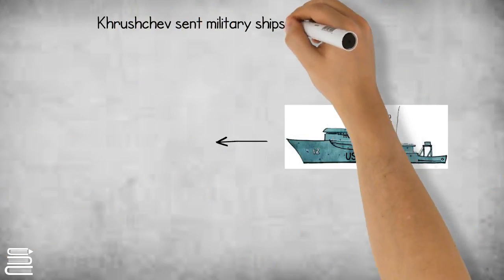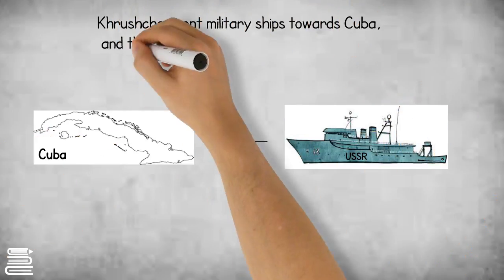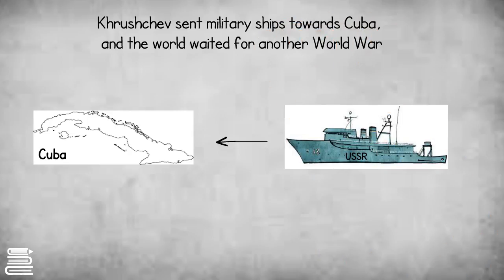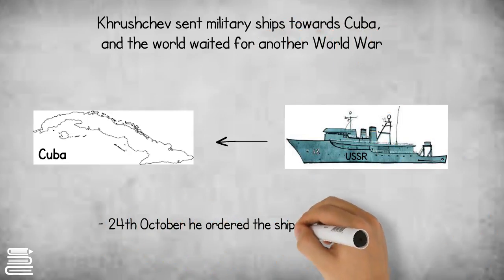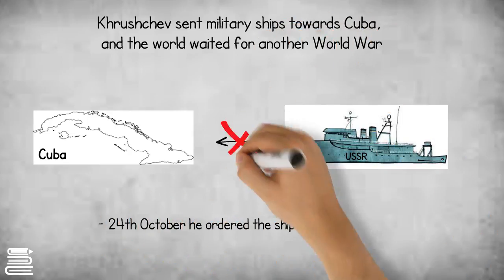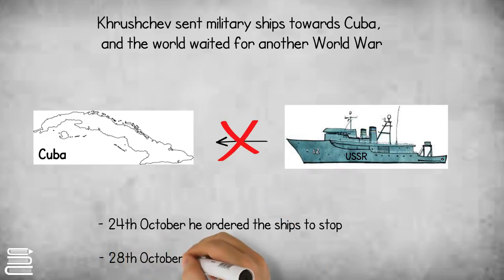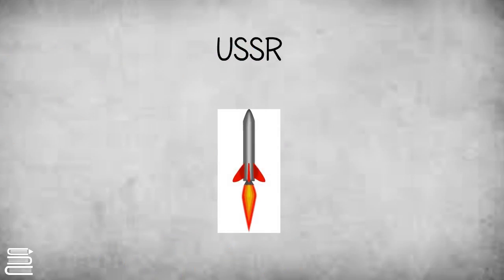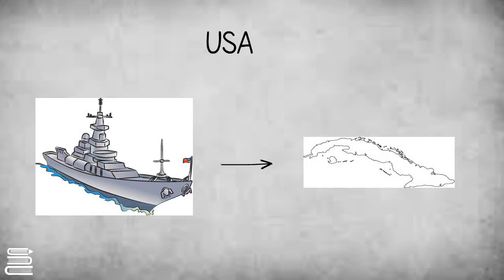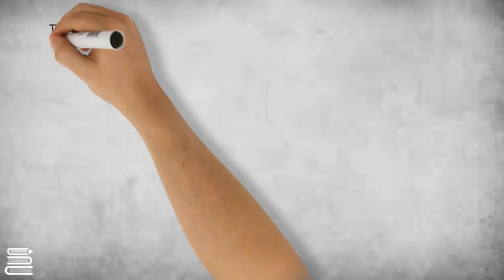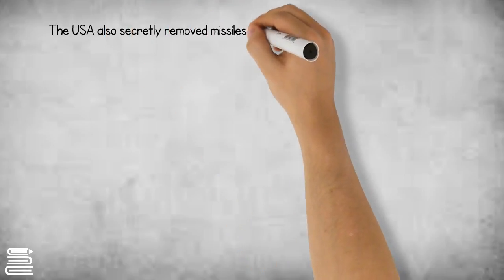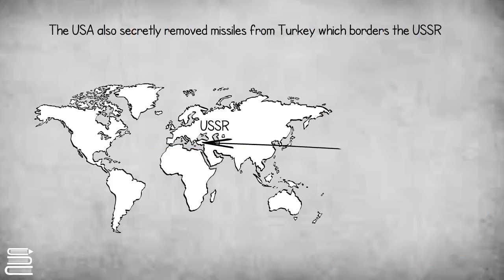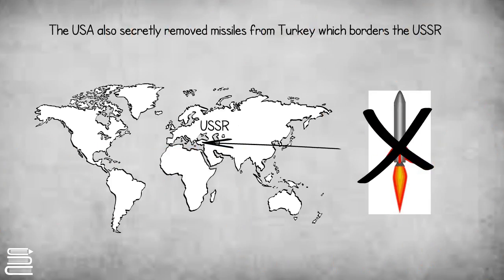Khrushchev sent military ships towards Cuba, and the world waited for another world war. Thankfully, he finally ordered the ships to stop on 24 October, and on the 28th of the same month a compromise was made. The USSR agreed to remove the missiles if the USA promised not to attack Cuba. The USA also secretly removed missiles from Turkey on the USSR border to prevent further conflict.